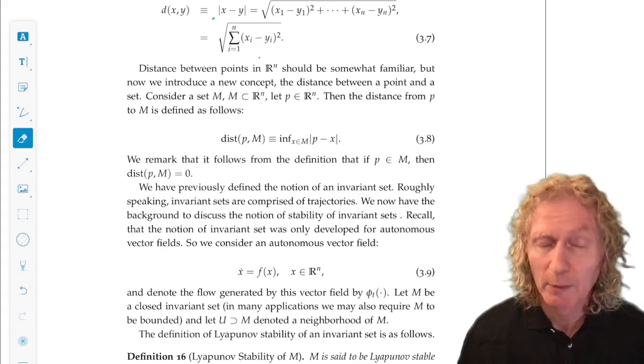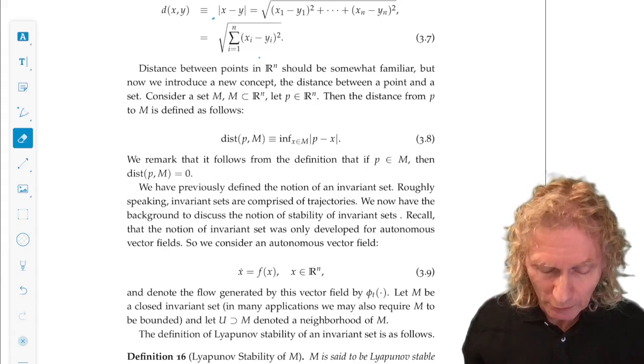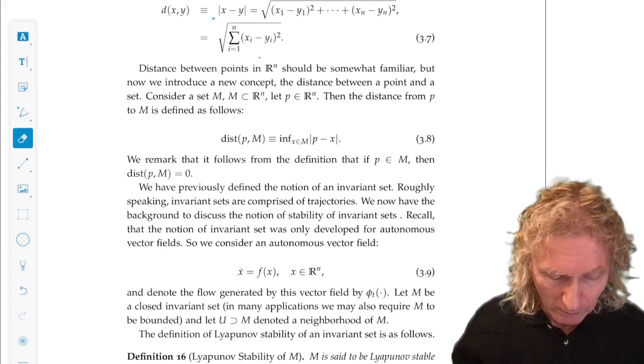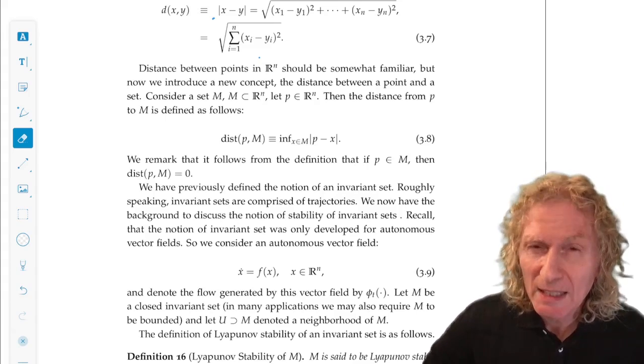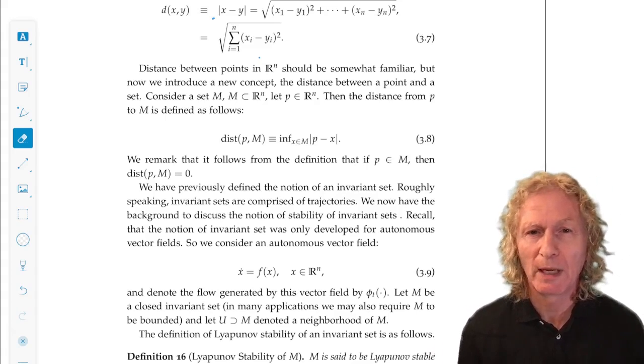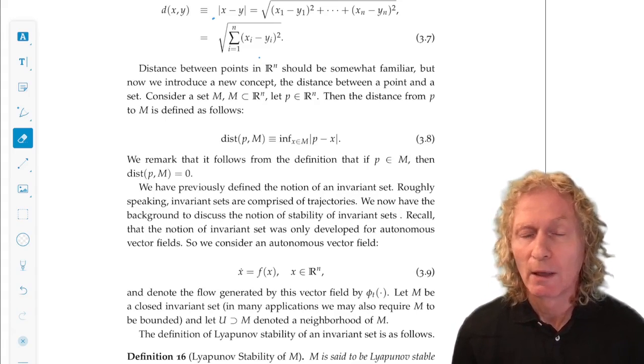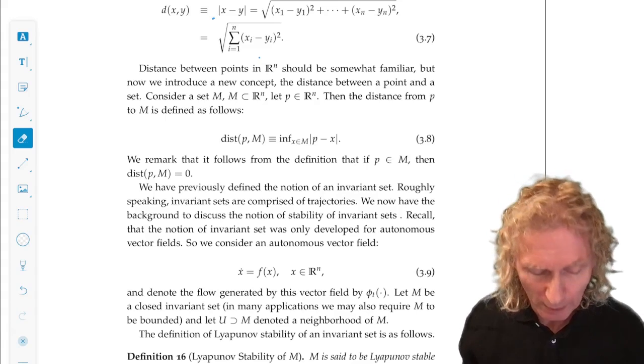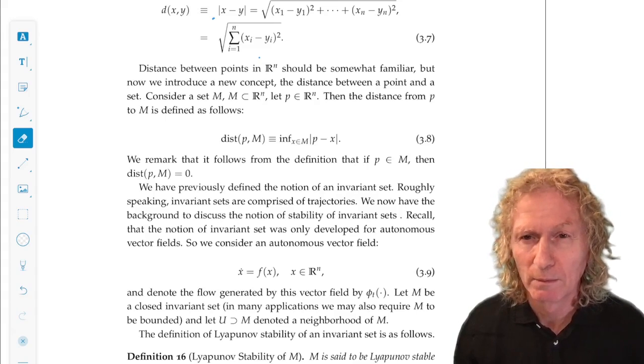Then Lyapunov stability of the invariant set M, it's still the same idea: start close, you stay close. In this situation, it's a bit different. For any neighborhood U of M, any neighborhood, if we take any point in that neighborhood, and we look at the forward time trajectory through it, we always stay in that neighborhood forever after.